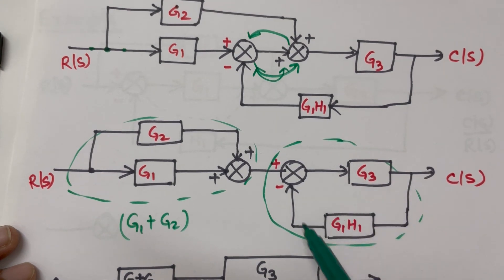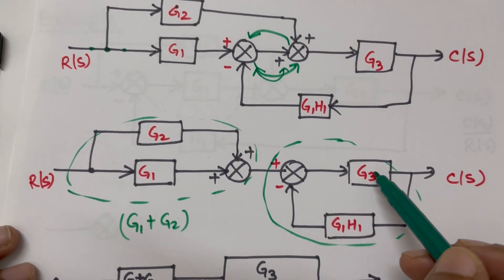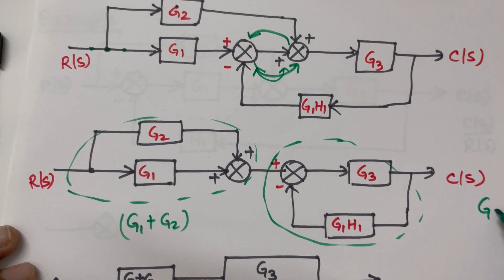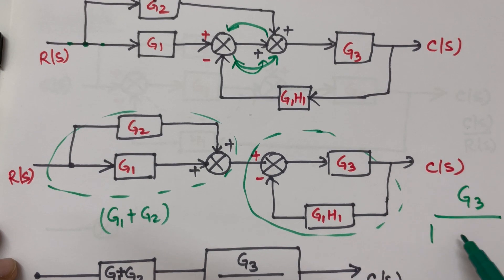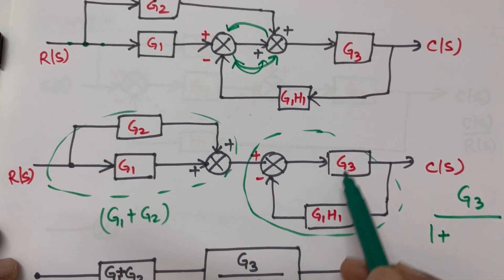And here since it is a feedback path, it will be main path G3 divided by 1, then if it is negative then here it will be positive - this two multiplication. So that means G1 H1.